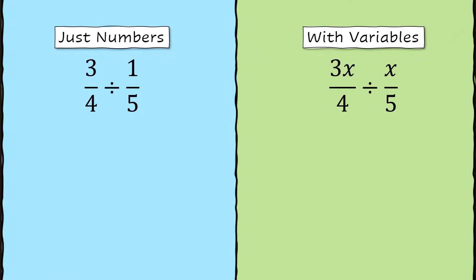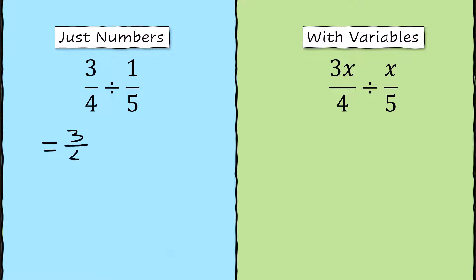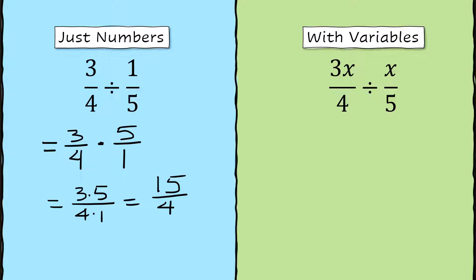Let's talk about division. This is one that people forget. When you are working with fractions and you are dividing, we do something called skip-flip-multiply, or we multiply by the reciprocal of the second fraction. We don't actually divide fractions — we just rewrite the problem, turn it into a multiplication, and flip the second fraction over. So 3 fourths divided by 1 fifth becomes 3 fourths times 5 over 1. Just turn the second fraction upside down, not the first one. Then multiply like normal: 3 times 5 over 4 times 1. The answer is 15 over 4.